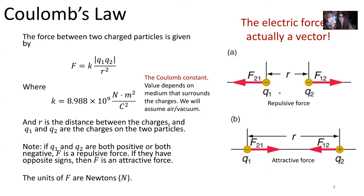If the charges are the same sign, the Coulomb force is repulsive. If they are opposite charges, the Coulomb force is attractive and they pull together. The notation F sub 2-1 is the force that charge 2 exerts on charge 1, drawn at charge 1 pointing toward charge 2 for attractive forces. F sub 1-2 is the force charge 1 exerts on charge 2, drawn at charge 2 pointing toward the other charge for opposite-sign charges, indicating attractive forces pulling the two particles together.